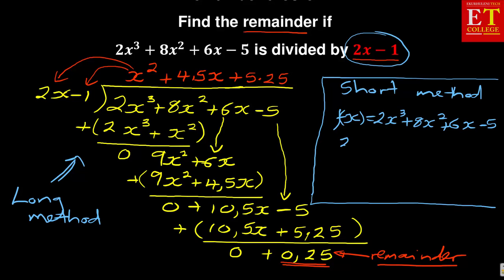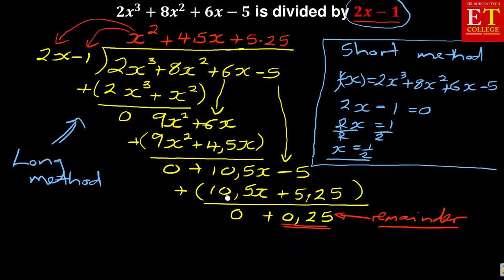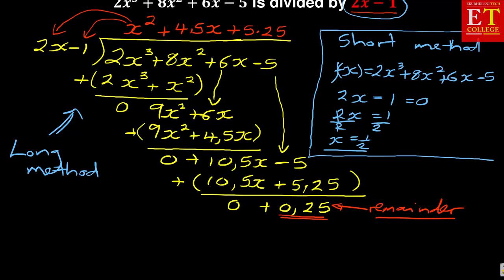Remember, they say it is divided by 2x minus 1. So you take 2x minus 1 and equate it to 0. Then you solve for x: 2x equals 1, divide by 2, and you have x equals 1 over 2. So now this is the value of x. With this value of x, I'm going to use my f of x.